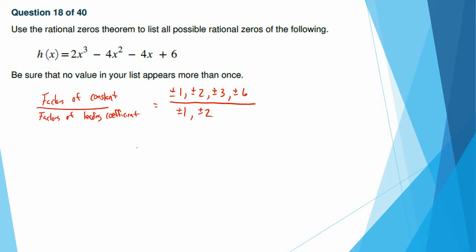So we're going to say 1 divided by 1 is 1. 1 divided by 2 is a half. 2 divided by 1 is 2. 2 divided by 2 is 1, but I've already got 1, so I don't have to write it. 3 divided by 1 is 3. 3 divided by 2 is 3 halves. 6 divided by 1 is 6. 6 divided by 2 is 3, but I already have 3, so I don't have to write it. And then I just go back in and put my plus or minuses.